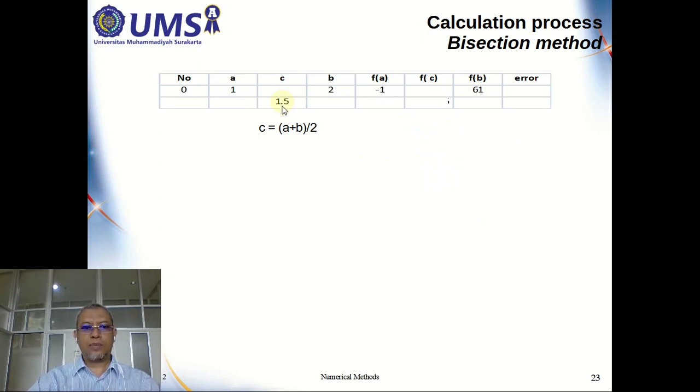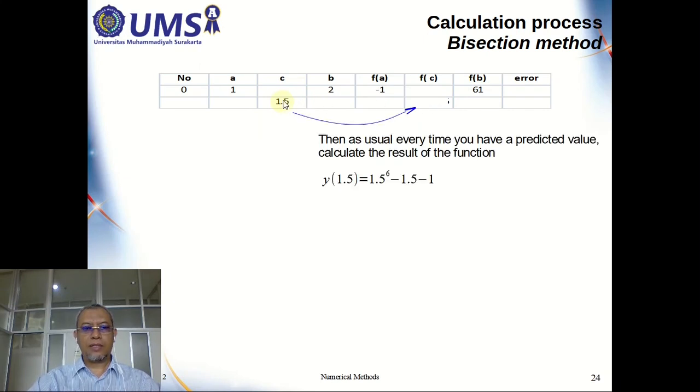Okay, then calculate 1.5 in the function. So put the value 1.5 to the function and then you have this value. Okay, now you have three values: negative, positive, positive. And remember, the range should be the function value. One is negative, another one is positive. So in that case, the values that you are going to use is A and C because negative and positive. You cannot use B and C because positive and positive. So A and C, those two are different signs. So that should be okay.